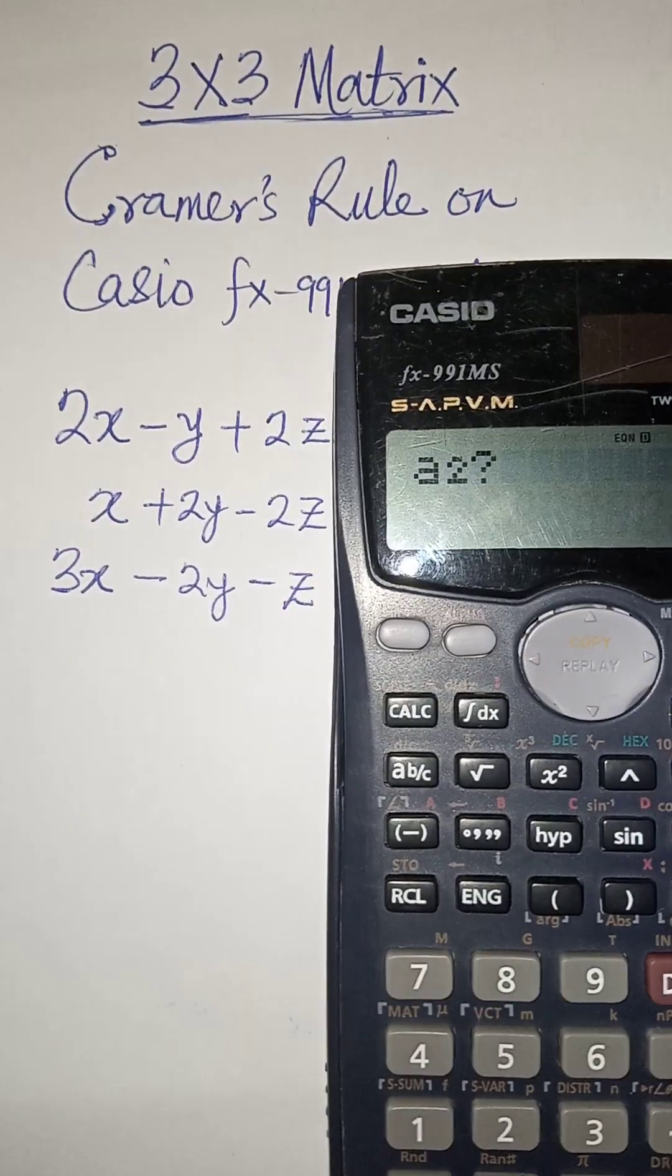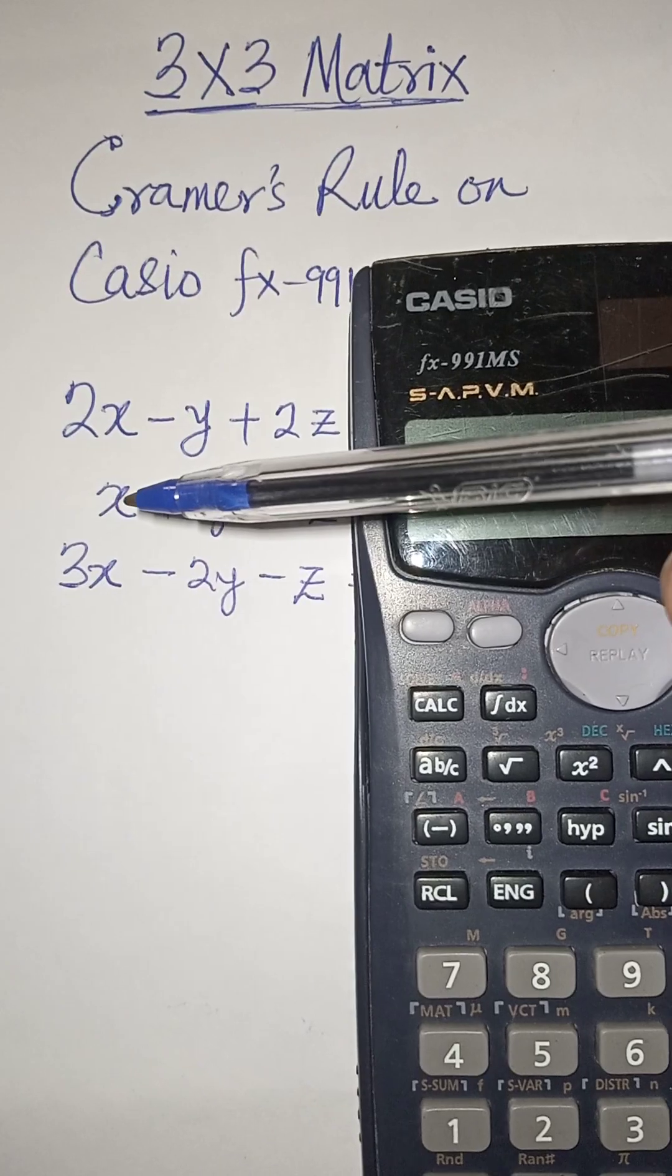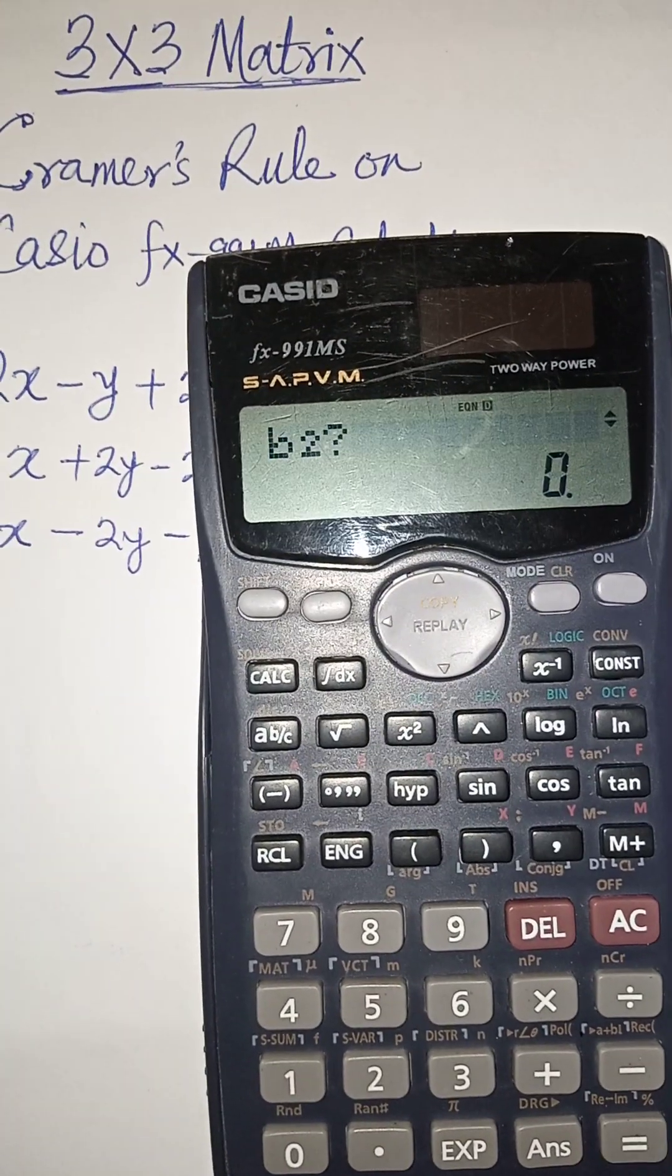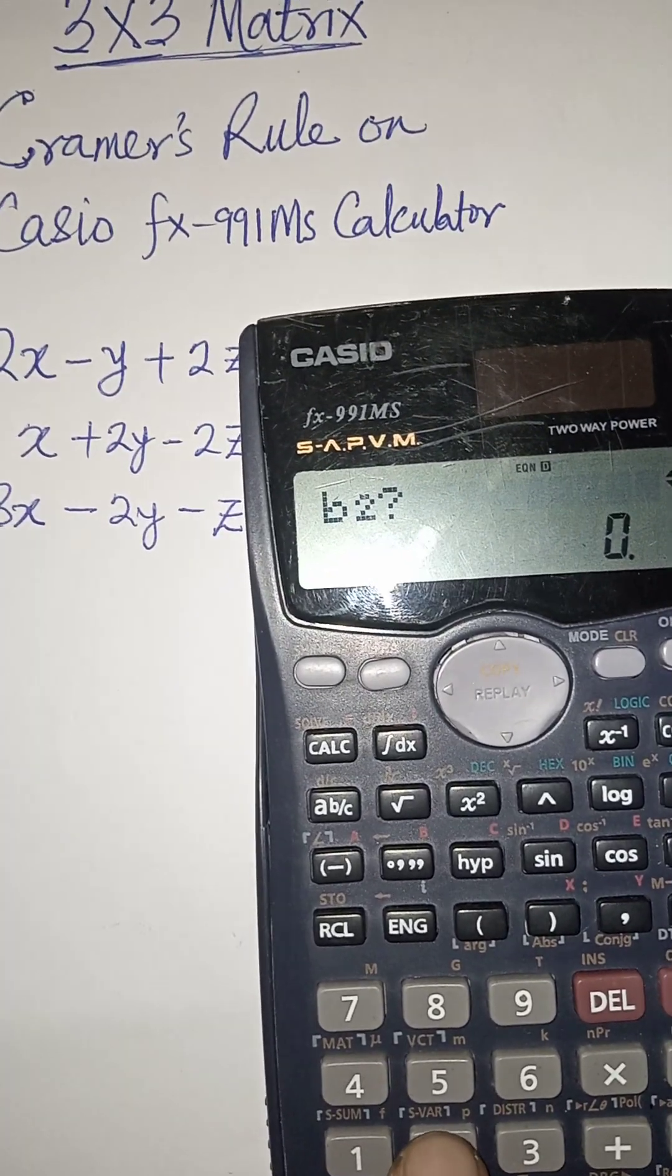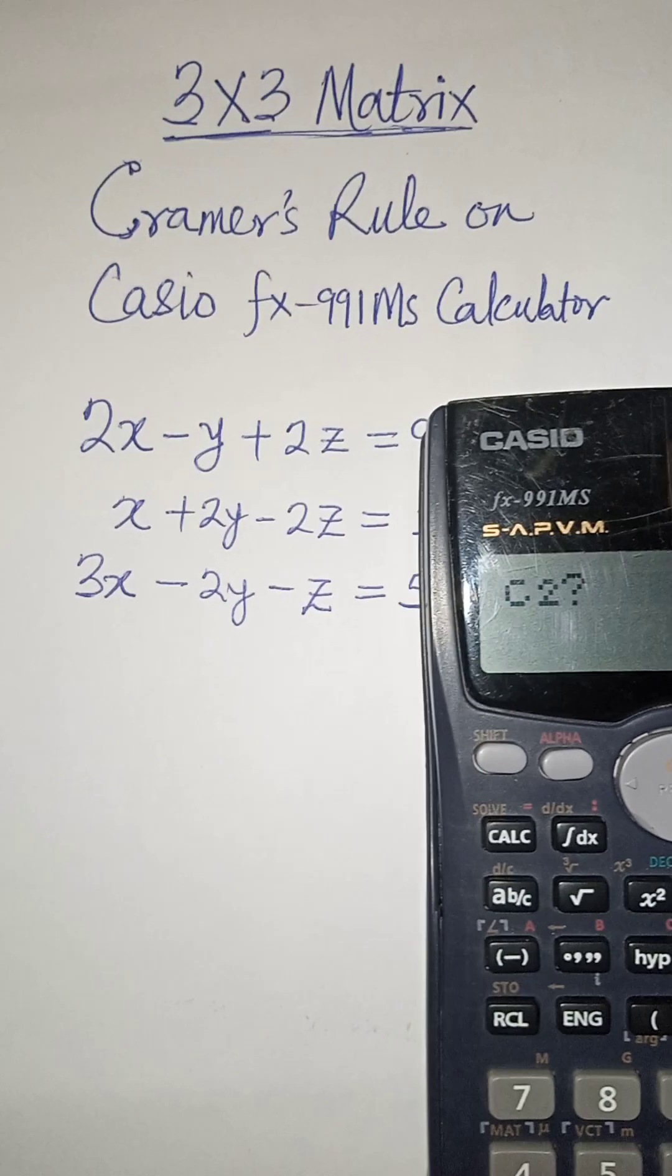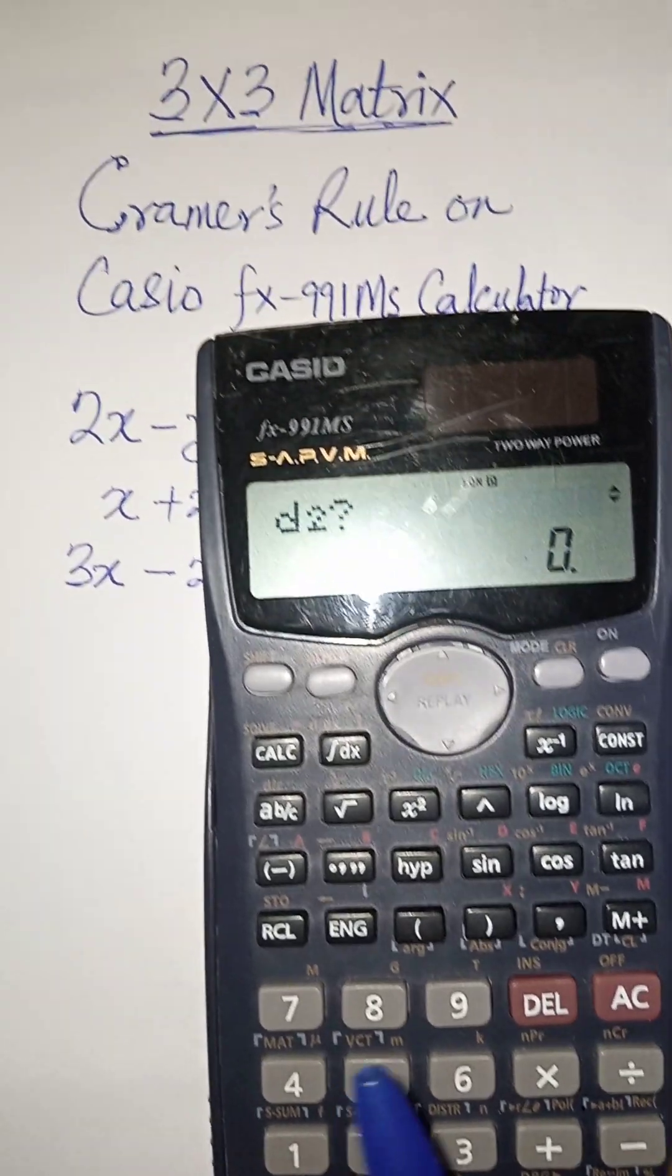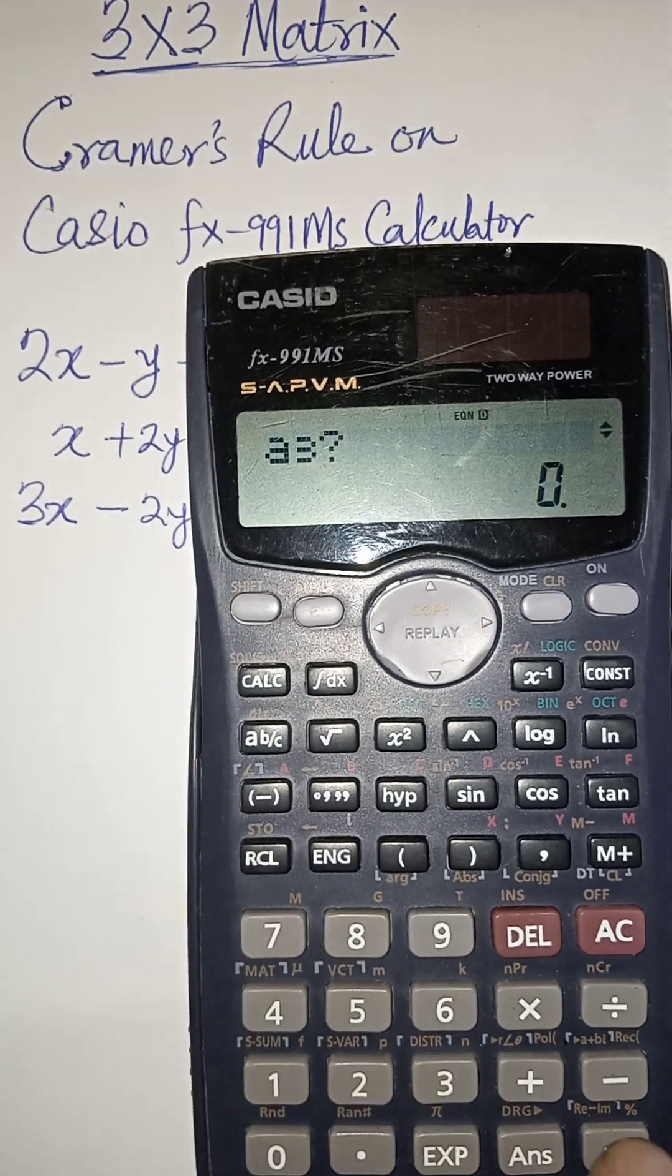It's asking for A2, which is the coefficient of x in equation 2, which is 1. Now you understand the pattern, so let's make it straight up. 1 equal to, coefficient of y is 2, press 2 equal to, that of z is -2, so minus 2 equal to, and the constant is 1.